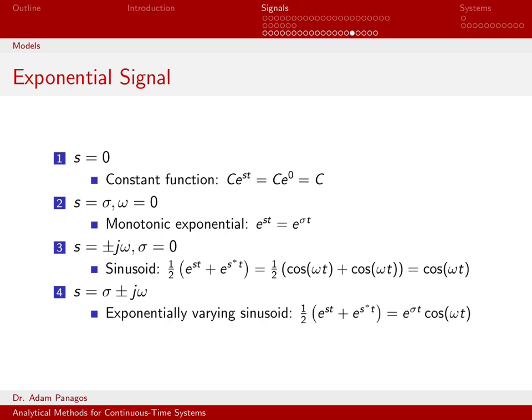So what about this special case, case 2? Let's set omega equal to 0 and let s just equal sigma. So we're turning off the oscillation part or the imaginary component. In that case, we have e to the st, which is just simply e to the sigma t because the omega part has gone away.